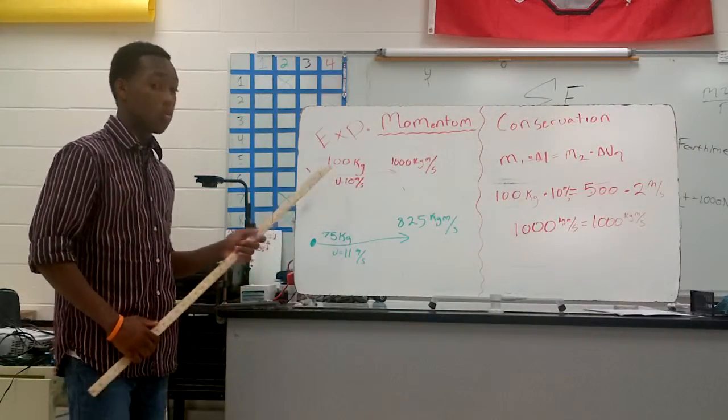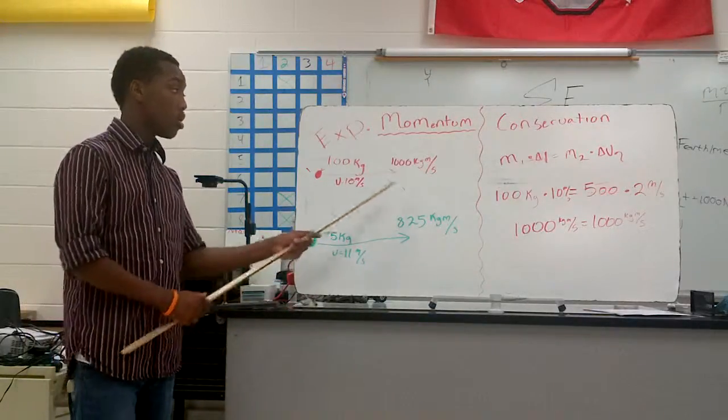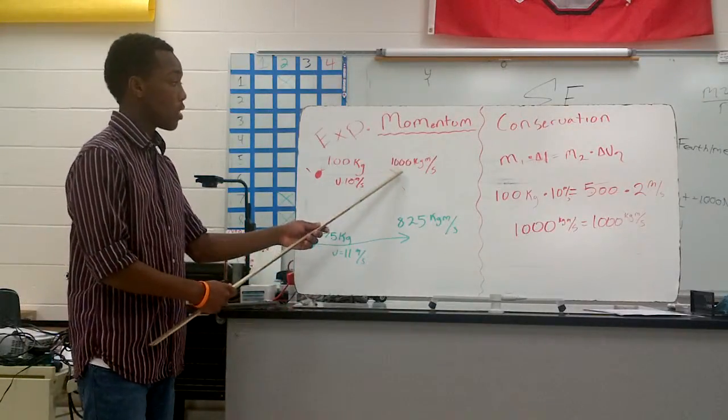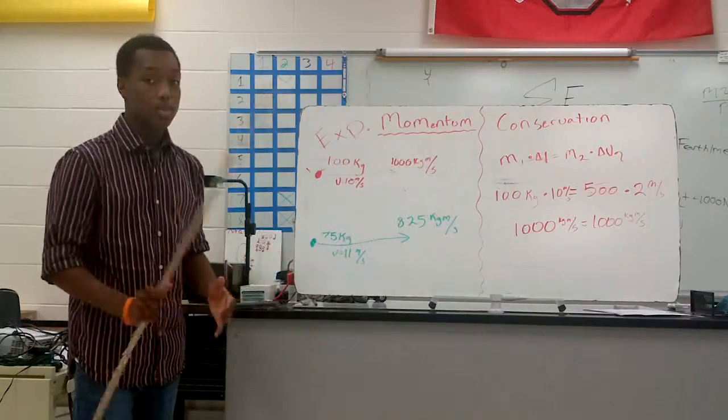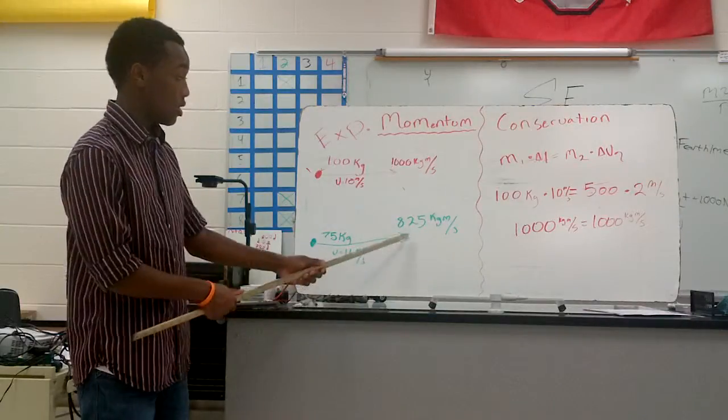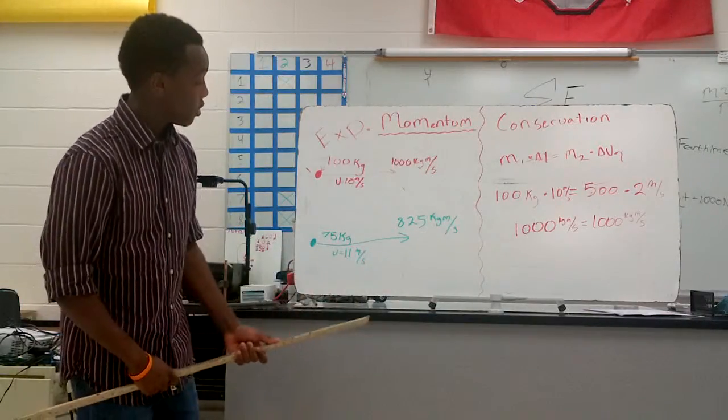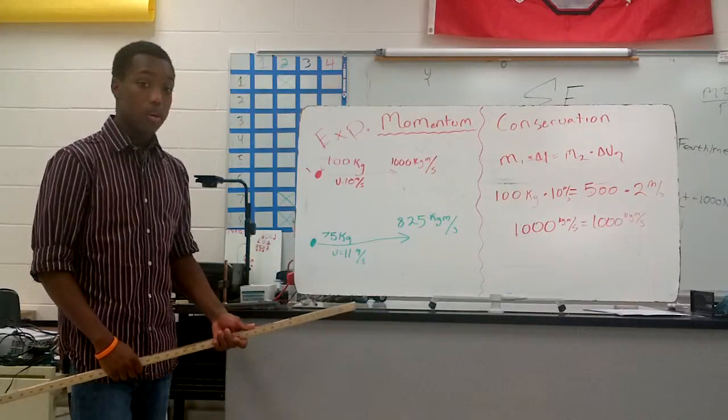So, if you go to here and you plug in the formula P equals m times velocity, we come up with 1,000 kilograms meters per second. Now, when we come down to this one, we see that if you do the math, it means that it has 825 kilograms meters per second. That's a lot of weight you pull it over every second.